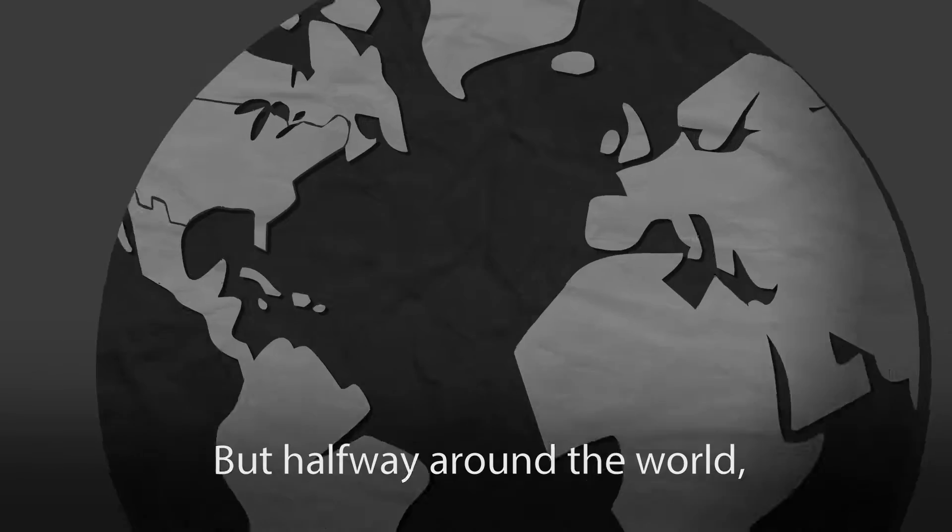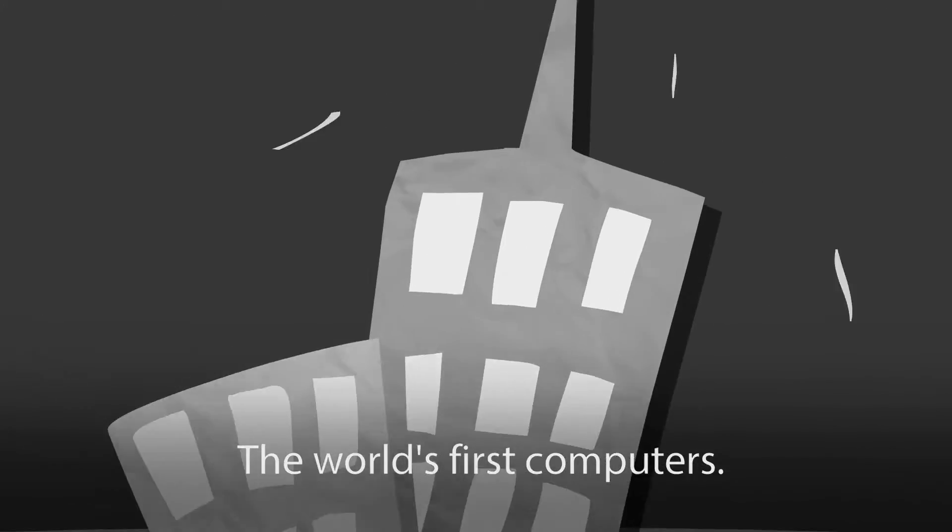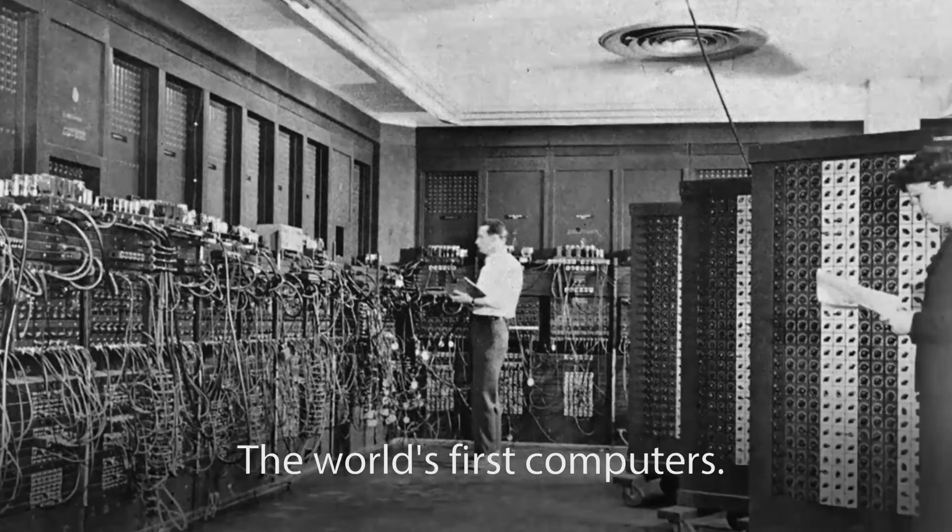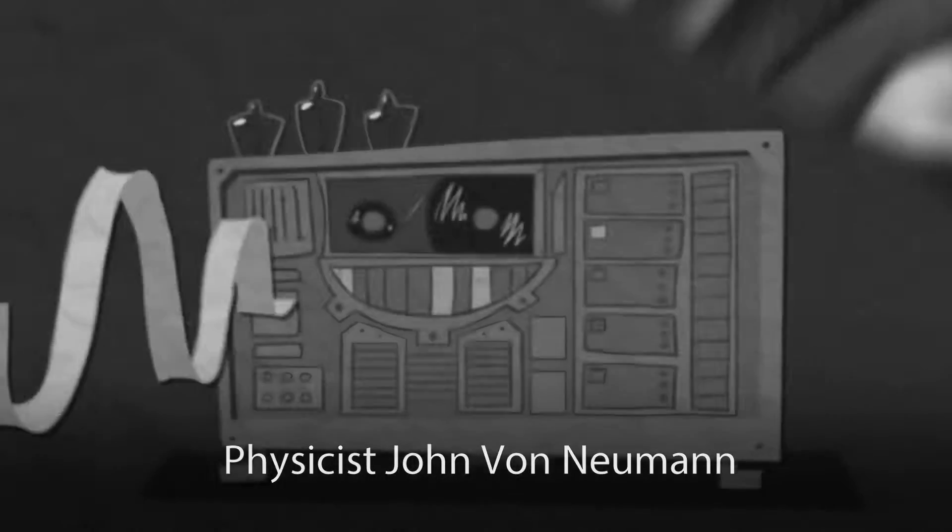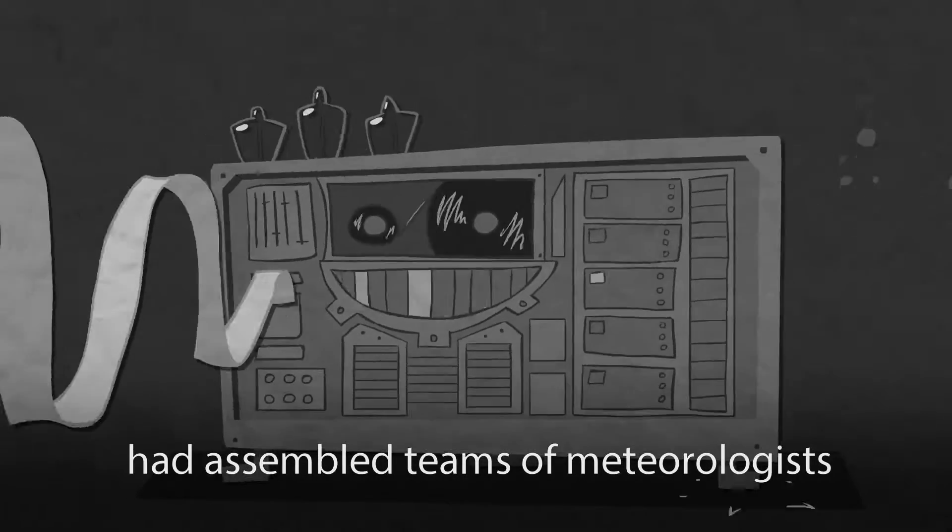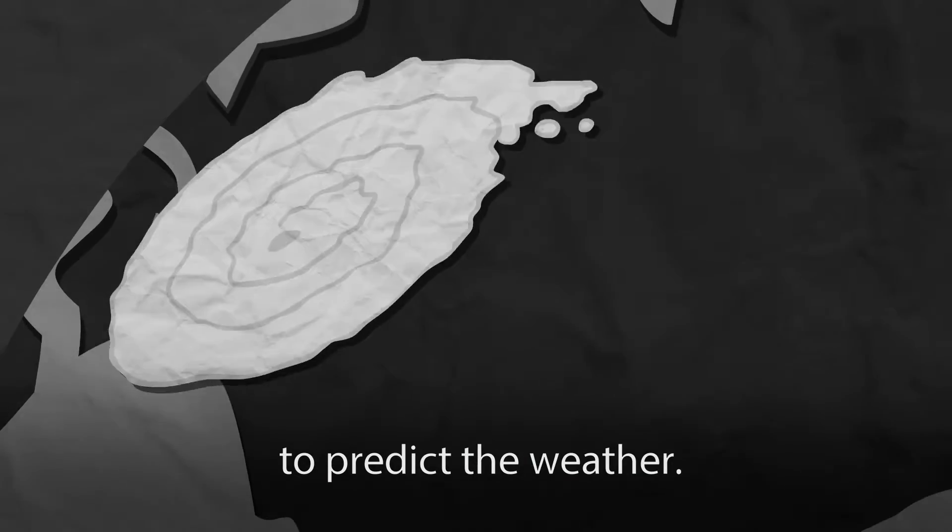But halfway around the world, something happened that would change this. Something big. The world's first computers. During the post-war years, physicist John von Neumann had assembled teams of meteorologists to test-drive them, to devise ways to use computers to predict the weather.